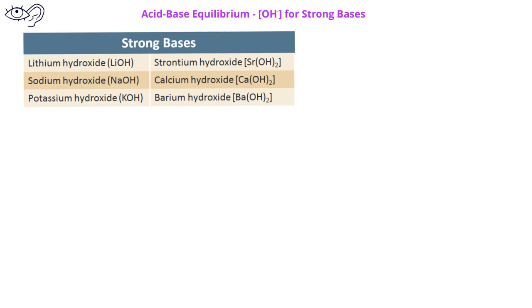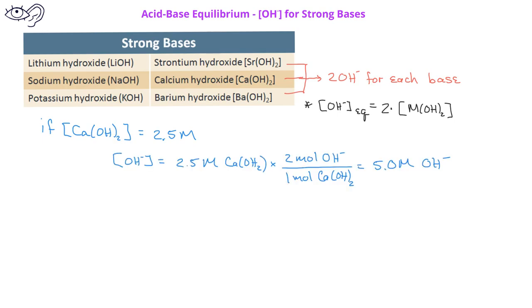You should note that for these last three bases, each of them have two hydroxides for every one mole of the base. This means that the equilibrium concentration of the hydroxide ion will be twice the concentration of the base. So for example, if we have a concentration of calcium hydroxide of 2.5 molar, at equilibrium, the concentration of the hydroxide ion would be 2.5 times 2 or 5.0 molar.